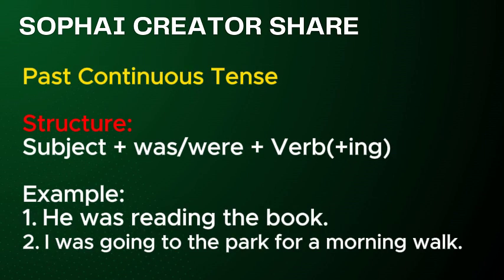Past continuous tense. Structure: Subject plus was or were, plus verb plus -ing. Examples: 1. He was reading the book.